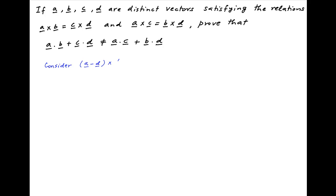In order to prove the given result, let's consider the cross product of vectors a minus d and c minus b. This is equal to a cross c minus a cross b minus d cross c plus d cross b.